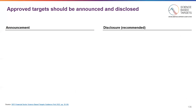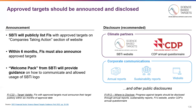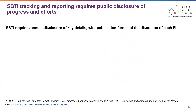Once approved, companies — whether financial institutions or not — should announce targets and disclose progress. SBTI will publicly list FIs on their website. However, FIs must also announce their approved targets within six months. SBTI will provide a welcome pack on how to communicate once approved. SBTI recommends that companies show their progress by reporting via CDP's annual questionnaire and corporations' own annual progress reports and website. Financial institutions are required to annually disclose their progress, efforts, and key details on their targets. SBTI does not require a specific publication format, and many organizations publish an annual sustainability update where they would include SBTI's required disclosures.